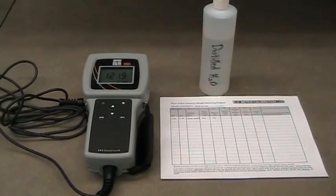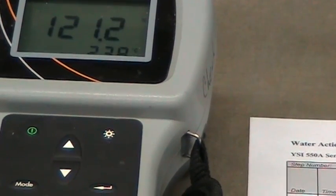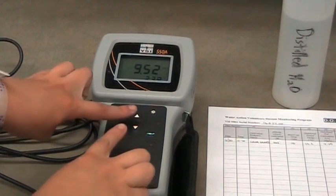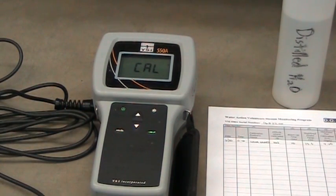Record the stabilized probe temperature. You will find this value in the lower right-hand corner of the screen. Press and release the up and down arrow keys on the meter at the same time to begin calibration mode. The letter CAL will appear in the lower left-hand corner of the screen and remain there for the rest of the calibration process.